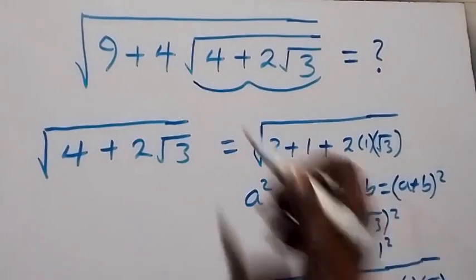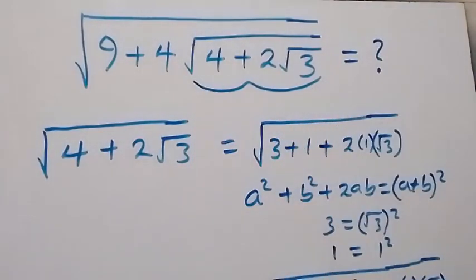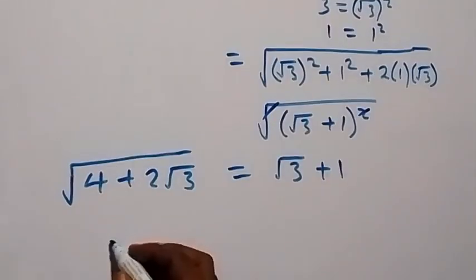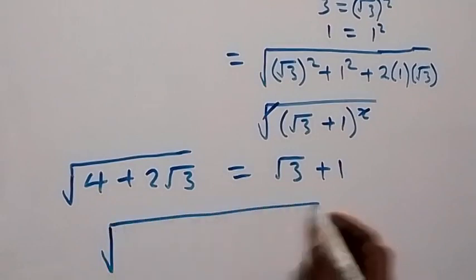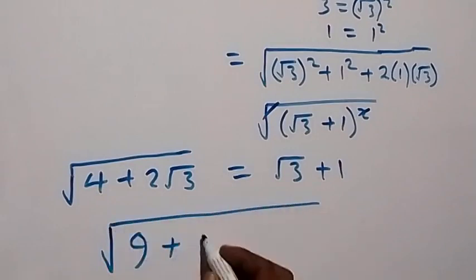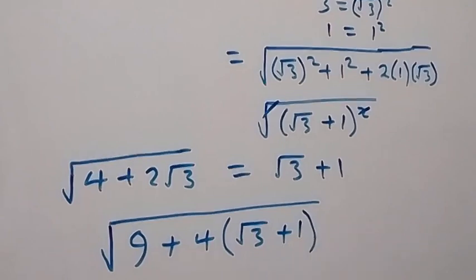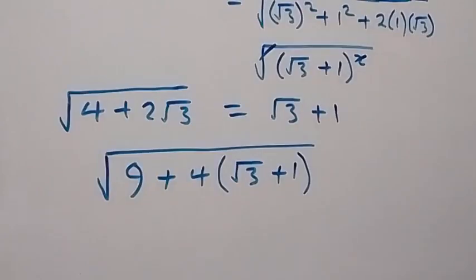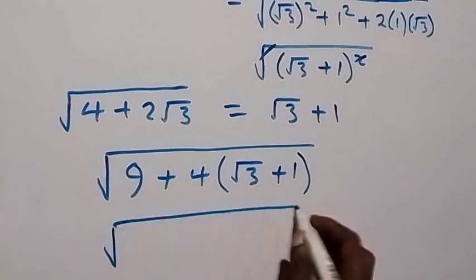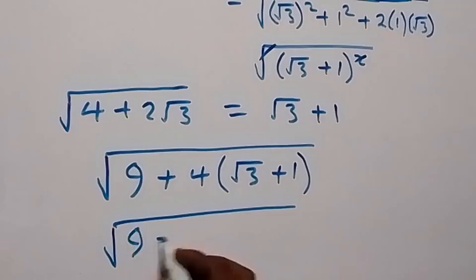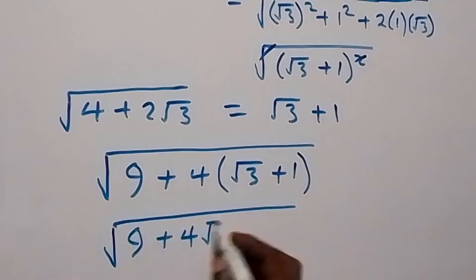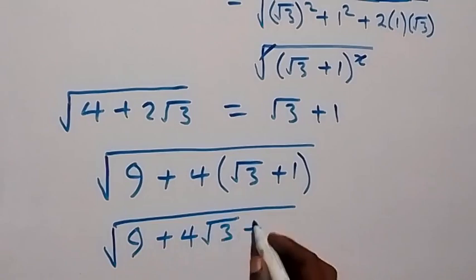Now we can rewrite what we have as √3 + 1. The main problem then becomes square root of 9 + 4(√3 + 1). Opening the bracket with 4, this becomes square root of 9 + 4√3 + 4.